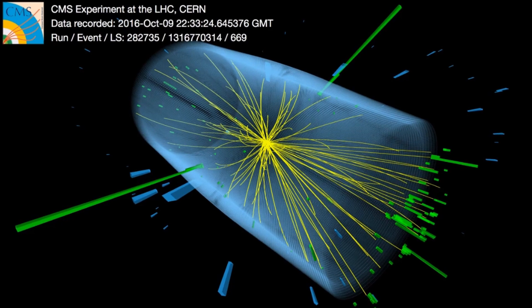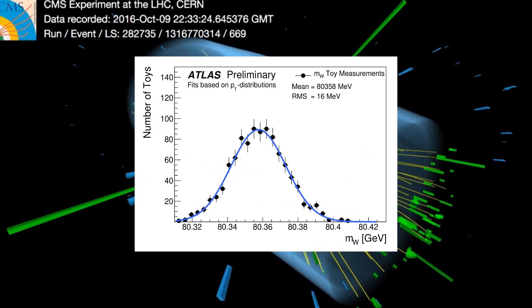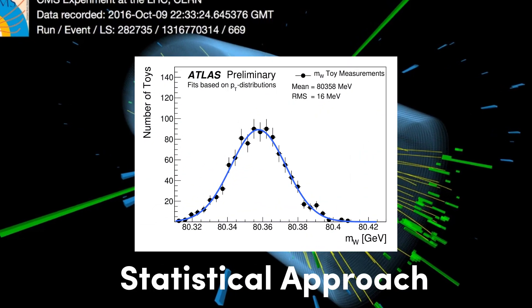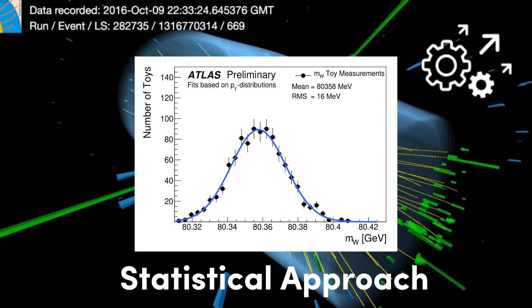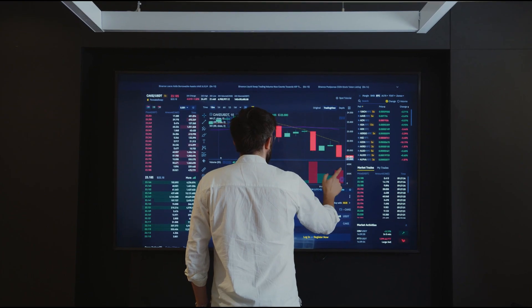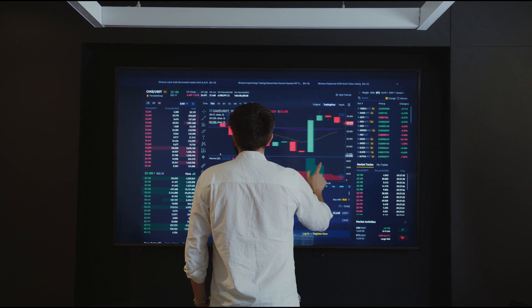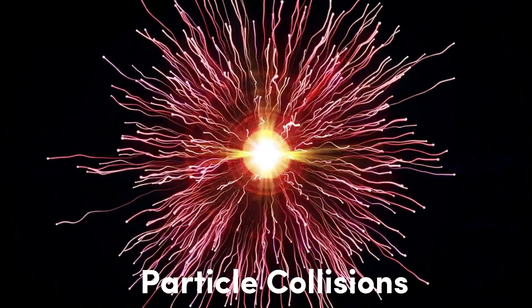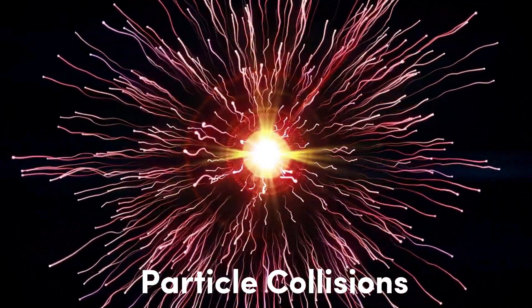The new measurement of the W boson's mass was made using an updated statistical approach based on improved understanding of the processes involved. The researchers reanalyzed the 2011 data from the Atlas experiment, focusing on particle collision events where the W boson breaks down into lighter particles.